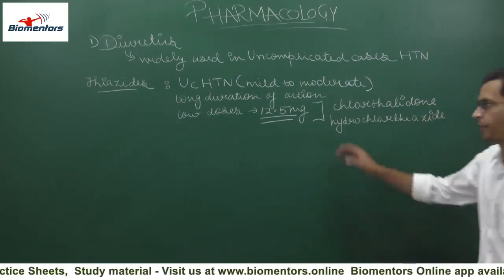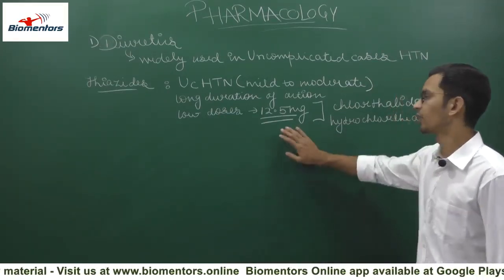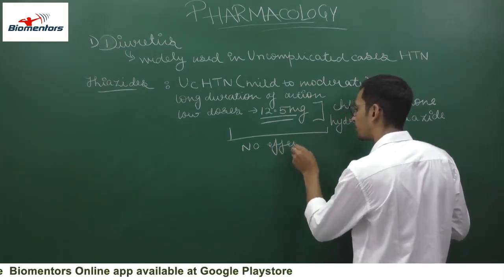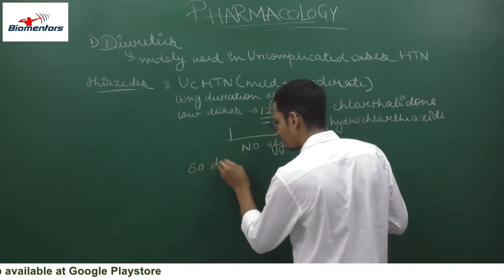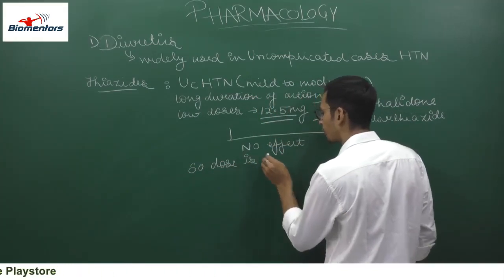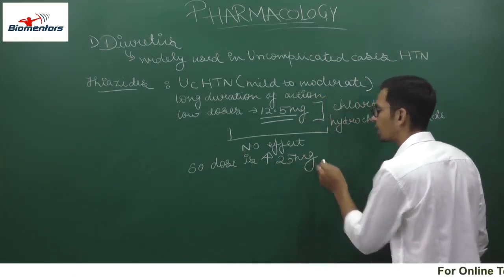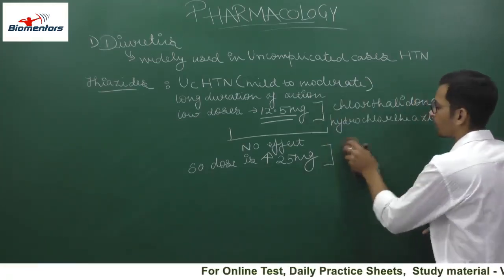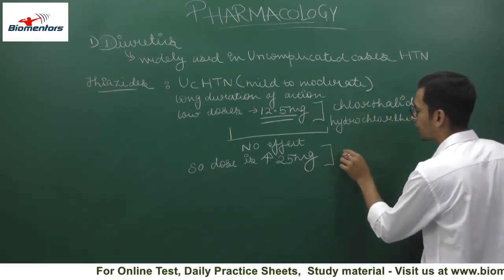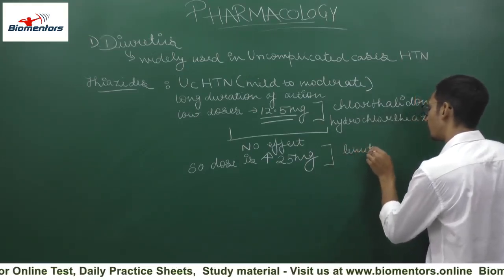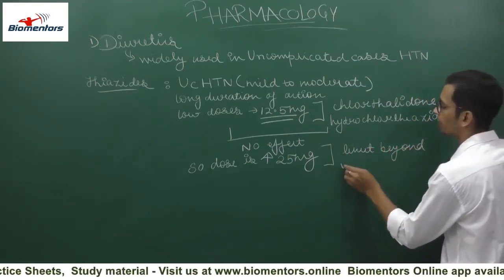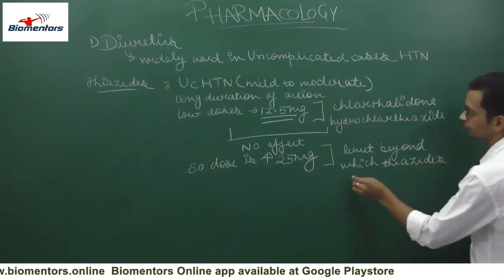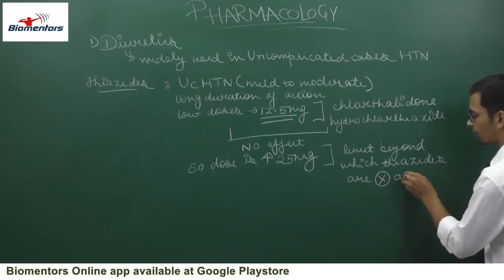When we administer diuretics at 12.5 mg and this particular dosage has no effect, the dose is increased up to 25 mg. This 25 mg is the limit beyond which thiazide dose cannot be increased and these drugs are not administered.